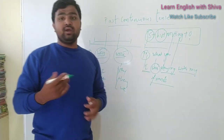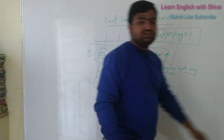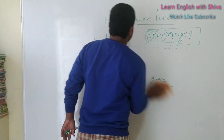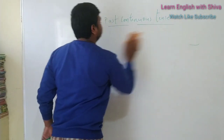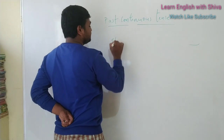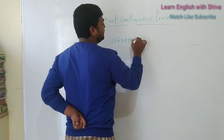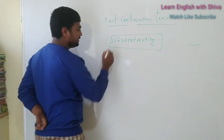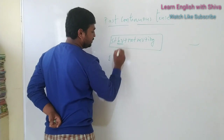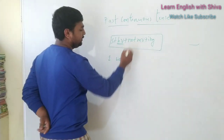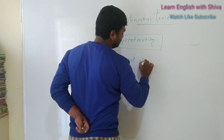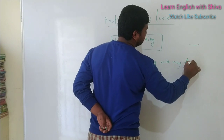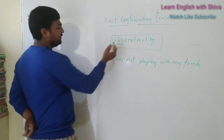This is a positive or affirmative sentence. Now how can we change it into the negative one? For the negative structure: Subject + helping verb + not + main verb + '-ing' + object. Taking the same sentence: I was not playing with my friends.